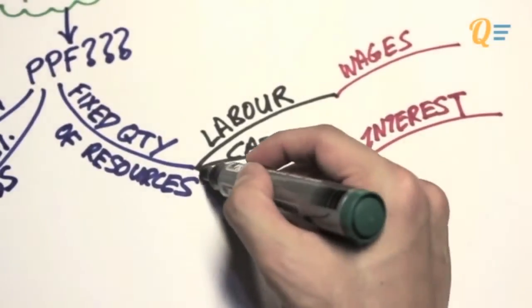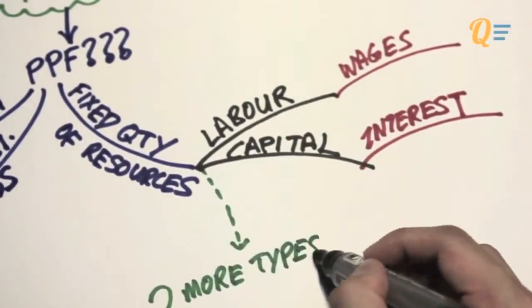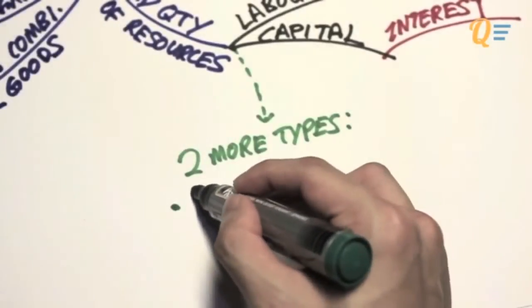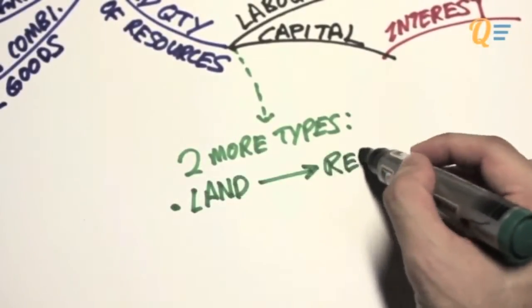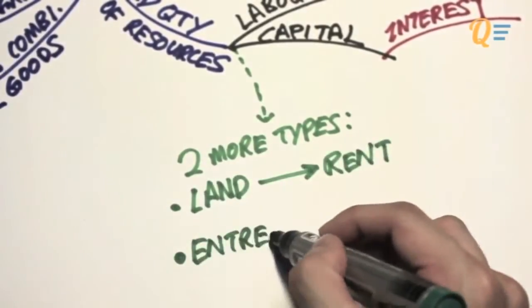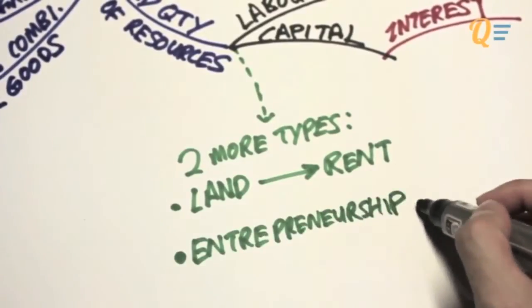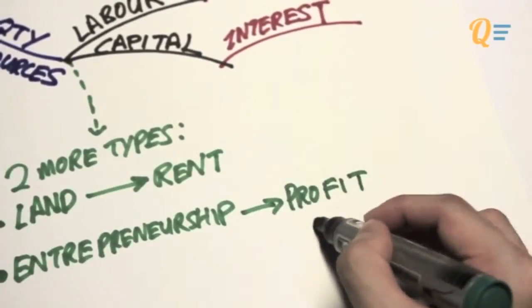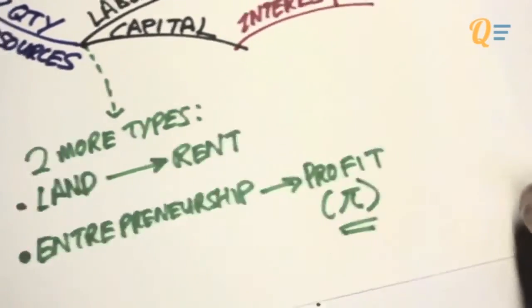There are actually two more types of resources in economic study. Just an introduction: the first type is called land, which we pay rent, and the second type is called entrepreneurship, which we pay profits. For the latter part, profits is commonly known as PI.